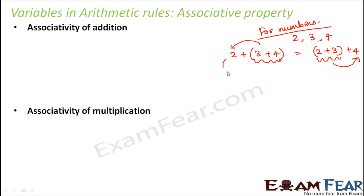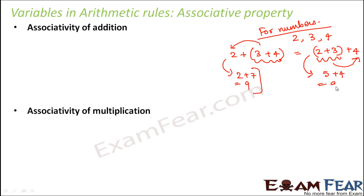For example, if you try to solve the left-hand side, you would see it is 2 plus 7 which is equal to 9. Similarly, if you try to solve the other side, you would see 2 plus 3 is 5, plus 4, so 5 plus 4 is 9. The result is the same in both cases. This proves that if you have three numbers, it doesn't matter which two numbers you add first because the overall result is going to be the same.